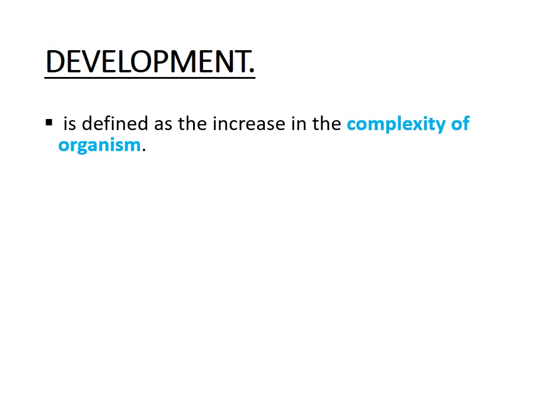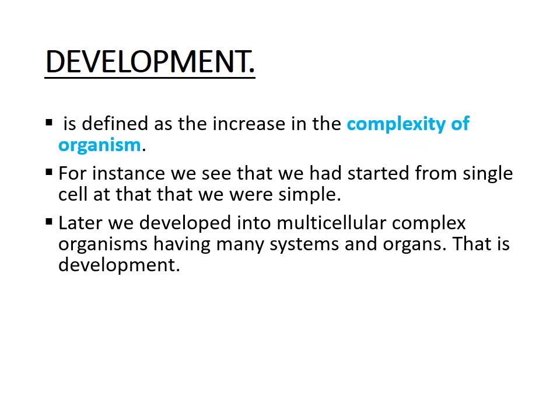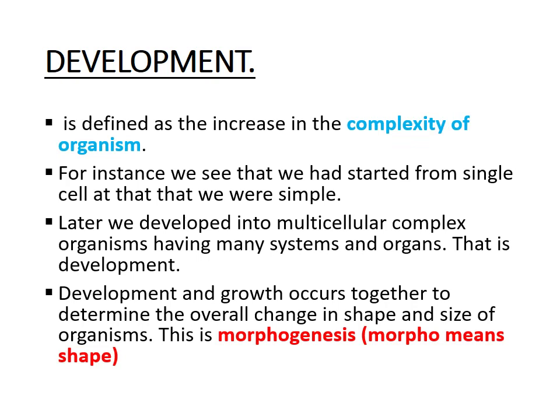What is development? Development is defined as an increase in the complexity of an organism. We started from a single cell, and at that time we were simple organisms with no systems like the respiratory or reproductive system. But as time goes on, the single cell differentiates and continues dividing to form a multicellular complex organism having many systems and organs working together. Development and growth occur together — you cannot have growth without development. They occur together to determine the overall change in shape and size of an organism, and this is called morphogenesis. Morphogenesis means the change in the shape of an organism, as 'morpho' means shape.